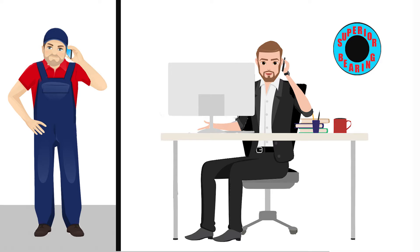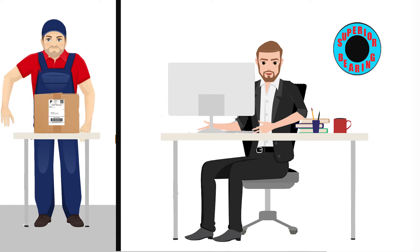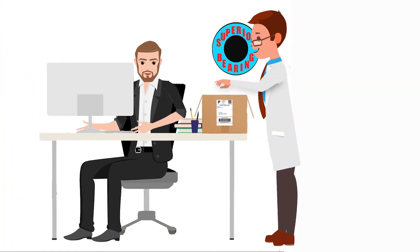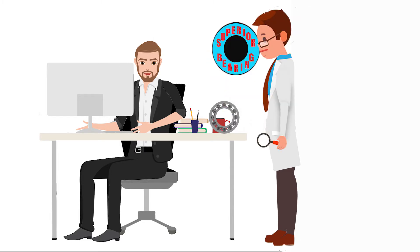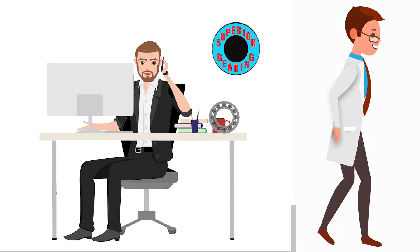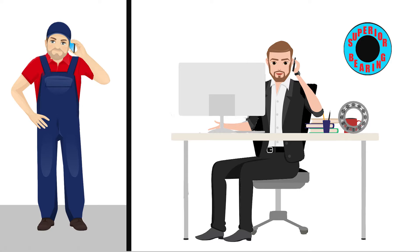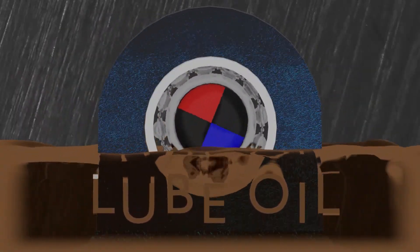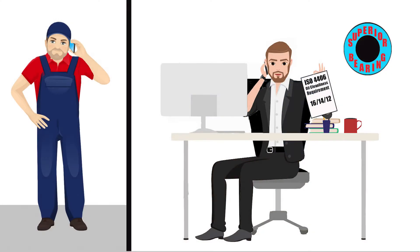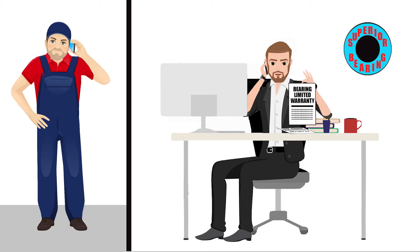The bearing company asked John to send them one of his damaged bearings for failure analysis, which he immediately did. Upon arrival, the bearing company had its technicians inspect the bearing. After a close review and internal discussion, they called John back. They told him the bearings were failing prematurely from wear caused by particulate contamination in his gearbox lubricating oil, and that their bearings required an ISO 4406 oil cleanliness code of 16/14/12 or better in order to maximize operational life and meet warranty.